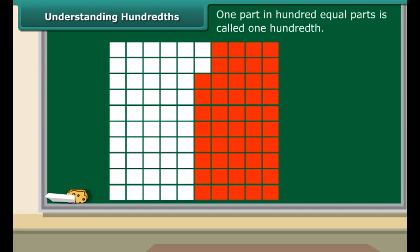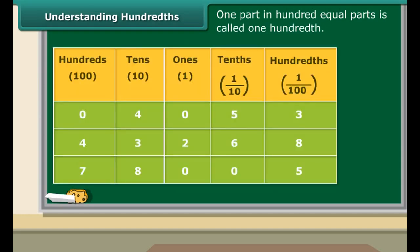Now concentrate on the table and let us read decimals from it. Look at the first row: 40 + 5/10 + 3/100 will make 40.53. Now focus on the second row: 400 + 30 + 2 + 6/10 + 8/100 will make 432.68.